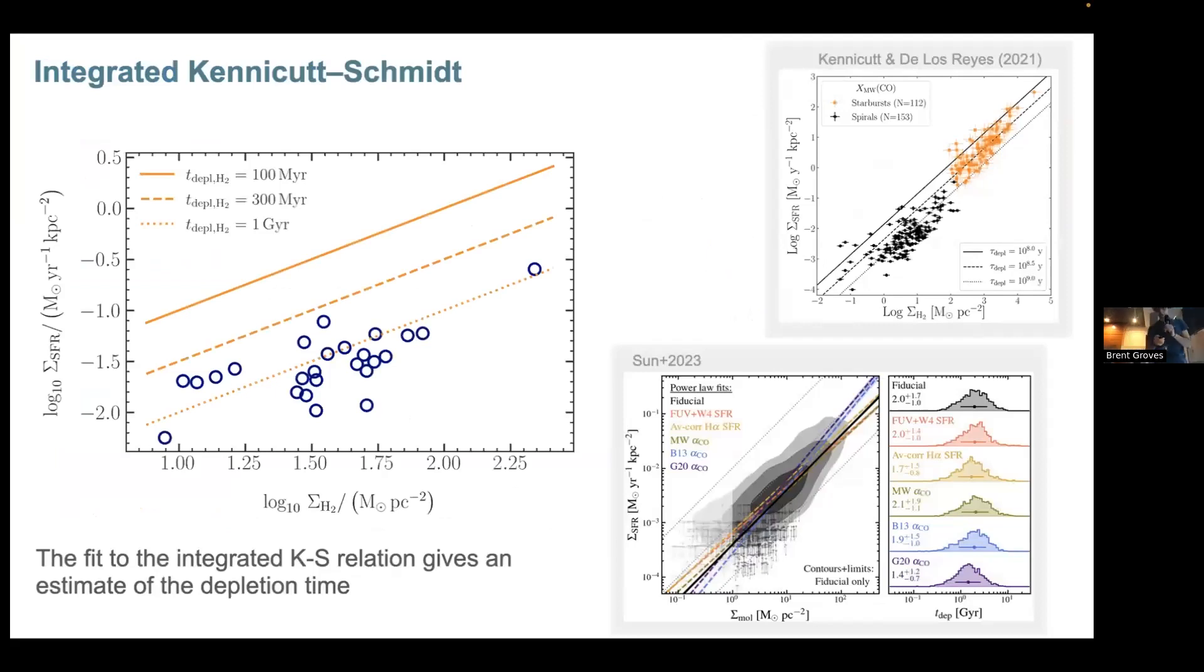We have the molecular gas surface intensity on the x-axis, star formation rate surface density on the y-axis. If we take the ratio of x over y, we get this estimate for the depletion time and we see that all of our galaxies more or less lie on almost constant one gigayear depletion time.